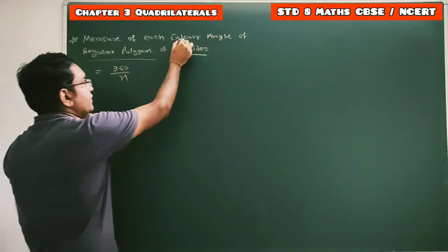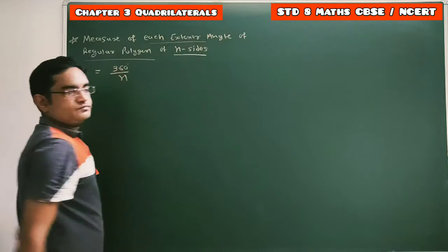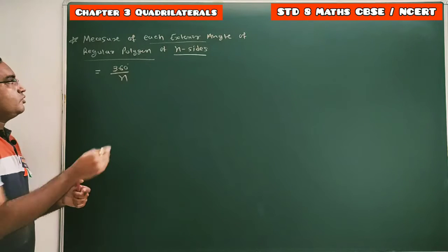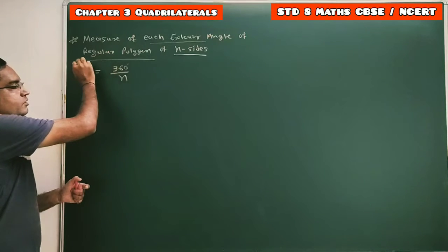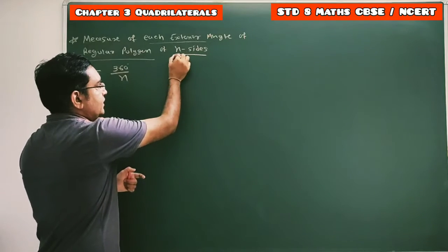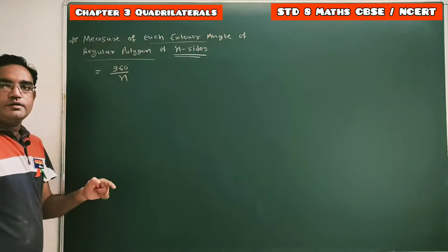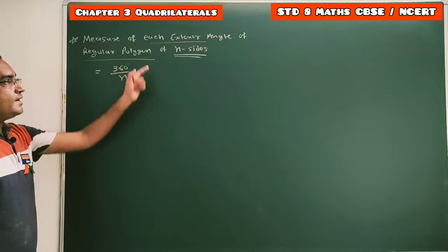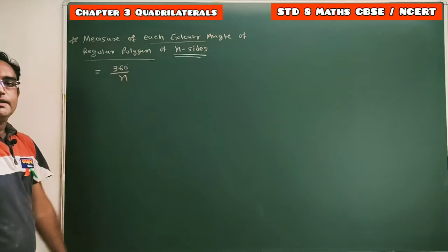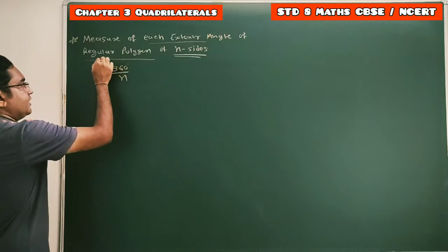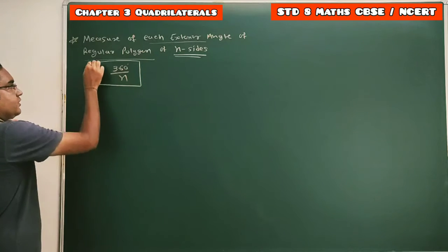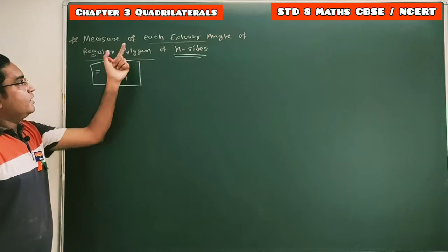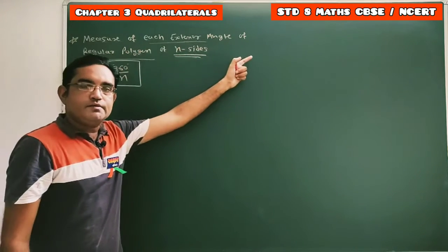For that regular polygon, we have to find the measure of each exterior angle. Since the given polygon is a regular polygon with all n sides equal, can we say all the exterior angles are also equal? Yes, all the exterior angles are equal and will be of the same measure.